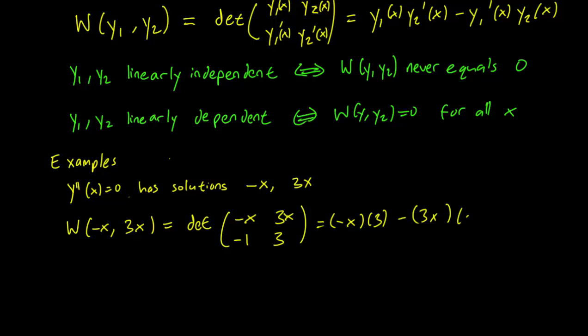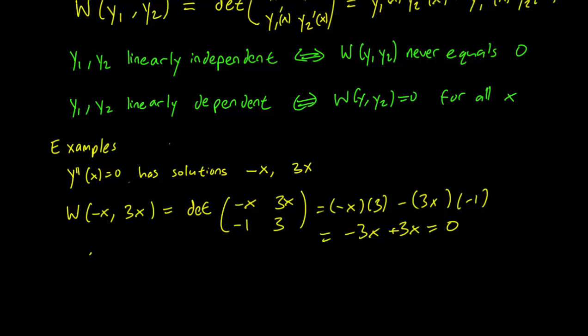Which is minus 3x plus 3x equals 0. And this will be 0 for all x. And we conclude that minus x and 3x are linearly dependent.